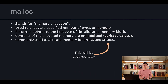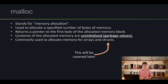Malloc stands for memory allocation, and it is used to allocate a specified number of bytes of memory. After malloc, it returns a pointer to the very first block allocated. The contents of the allocated memory are initialized to garbage values — whatever was there before are our initial values. We commonly use malloc to allocate space for arrays, strings, or structs.